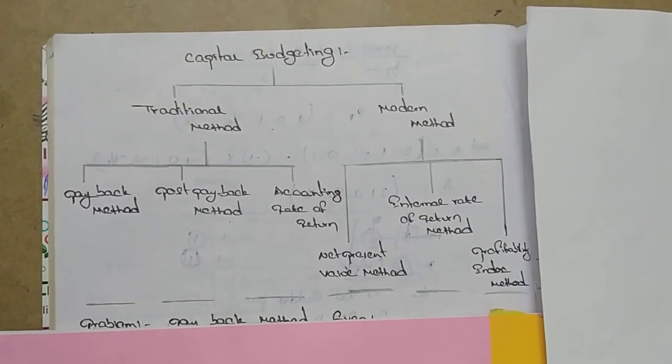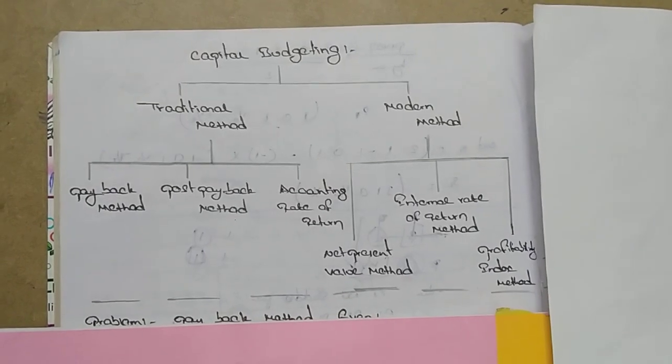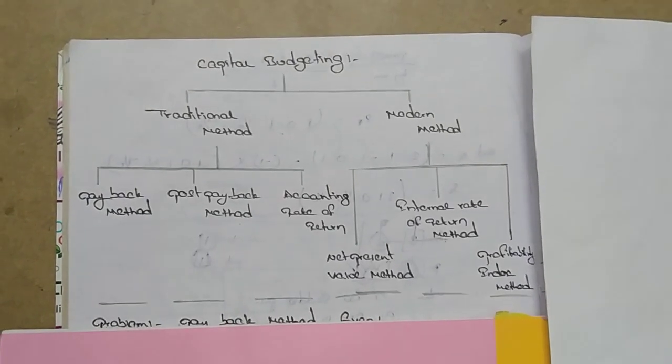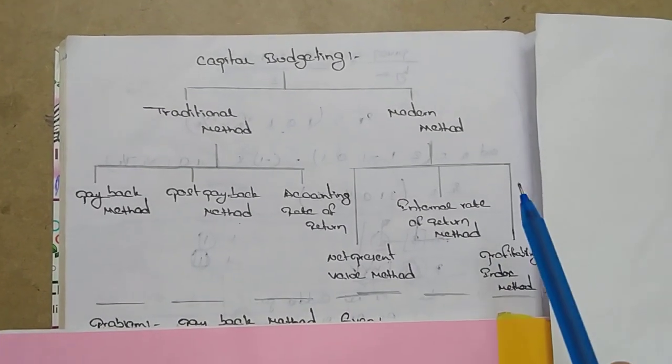Today's topic is Capital Budgeting. Capital Budgeting is used by companies to evaluate major projects or investments. In capital budgeting, there are two types: traditional method and modern method.